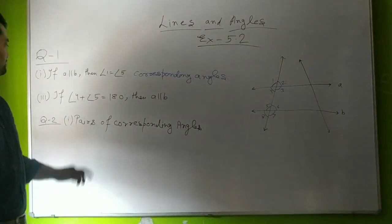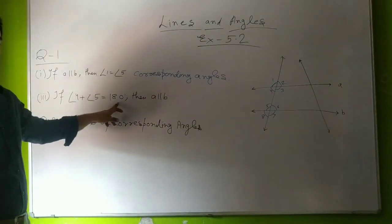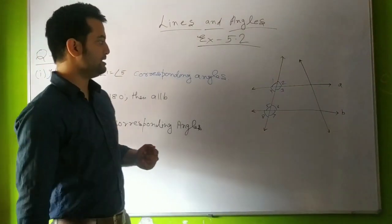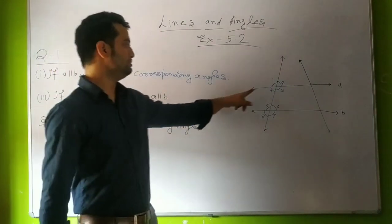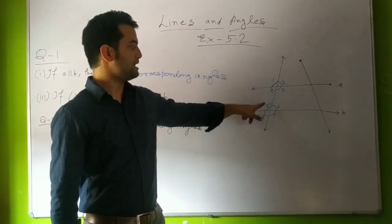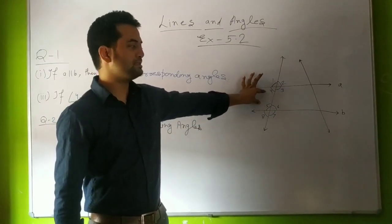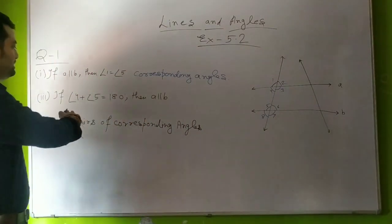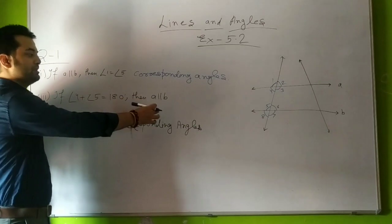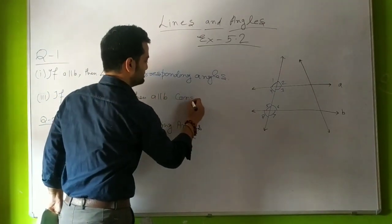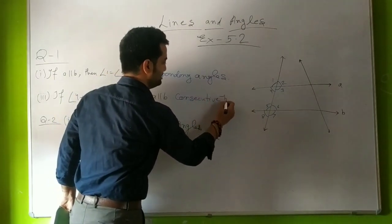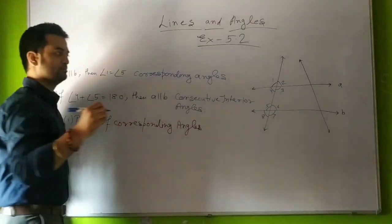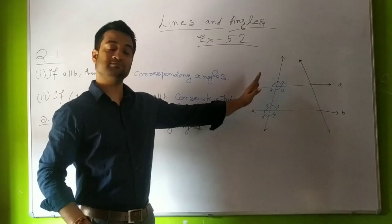The second question: if angle 4 plus angle 5 equals 180 degrees, then A will be parallel to B. We know from the property of consecutive interior angles that if you look at angles 4 and 5, both are in the interior part and are consecutive angles. We know that if consecutive interior angles are supplementary then the lines are parallel. So the property used here is consecutive interior angles, also known as interior angles on the same side of the transversal.